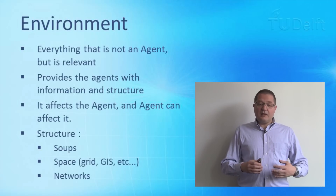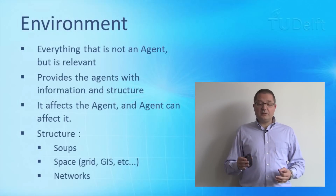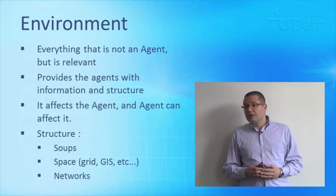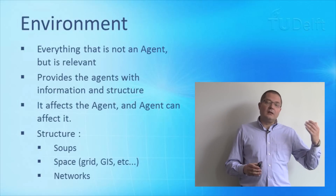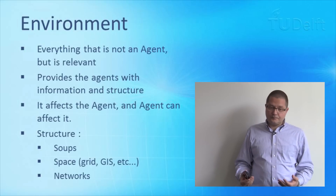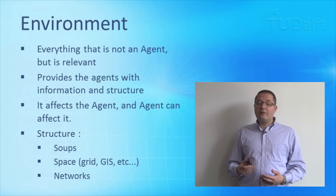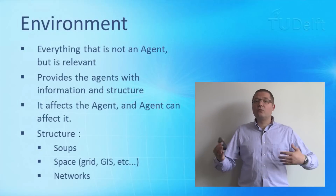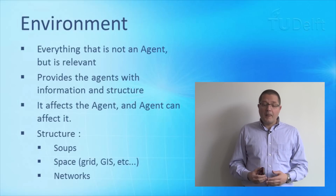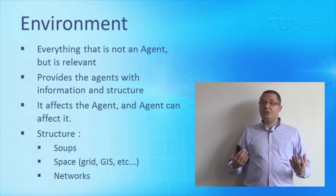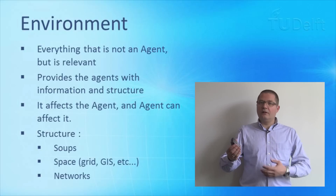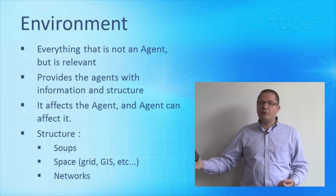The environment is the thing that the agent is in — everything that's not an agent but is relevant. The environment provides the agent with structure and information. For example, if I'm an investor agent deciding whether to build a power plant, I might consider the cost of capital or the interest rate — something external that the world sets. The environment can also provide space: an agent can be on a grid with eight neighbors, in a physical GIS map, or in a network where it can see first and second degree neighbors.